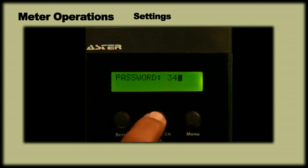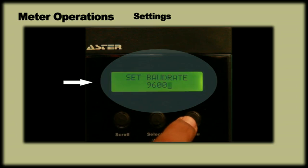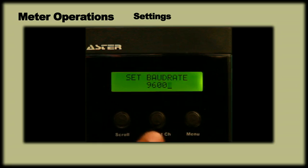Press menu and the display will show baud rate. On pressing the menu key again, the display will show a previously set baud rate. One can select between 4800 or 9600 by using the select ch key.